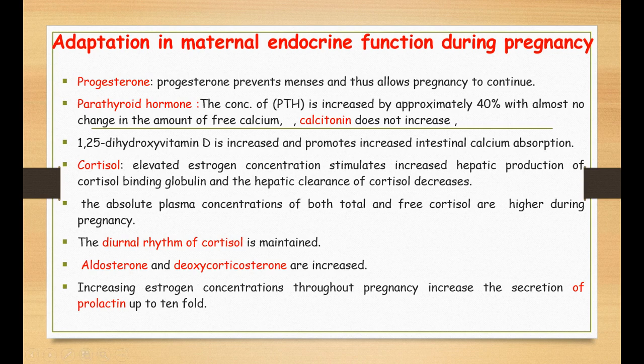Prolactin increases about 10 times its level in non-pregnant females, due to the increase in estrogen. In summary of endocrine adaptation: progesterone increases (first from corpus luteum, later from placenta); estrogen increases; prolactin increases; parathyroid hormone increases; active vitamin D (1,25-dihydroxyvitamin D) increases; total and free cortisol increase with diurnal rhythm maintained; aldosterone and deoxycorticosterone increase; and calcitonin does not change.